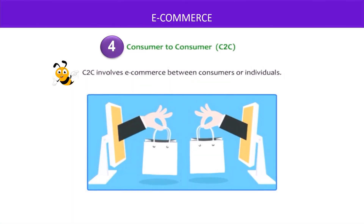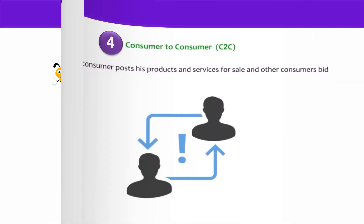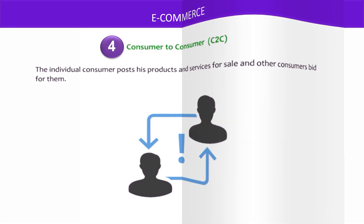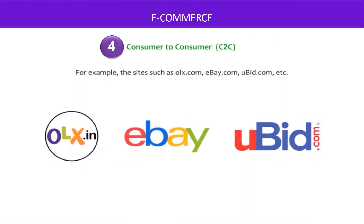The fourth mode is Consumer to Consumer, or C2C. C2C involves e-commerce between consumers or individuals. The individual consumer posts his products and services for sale, and other consumers bid for them. Examples of such sites include OLX.com, eBay.com, uBid.com, and others.